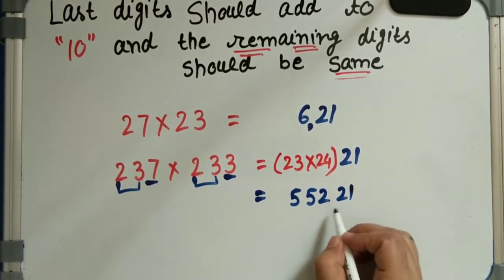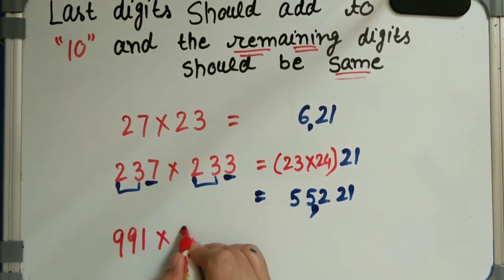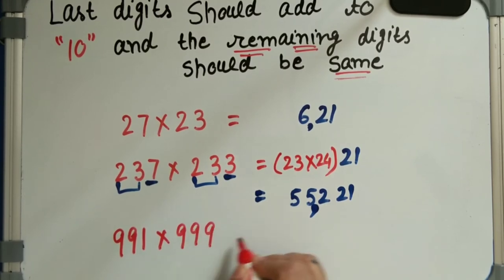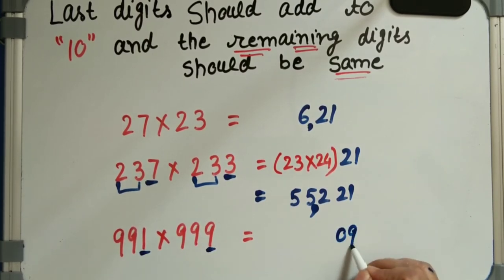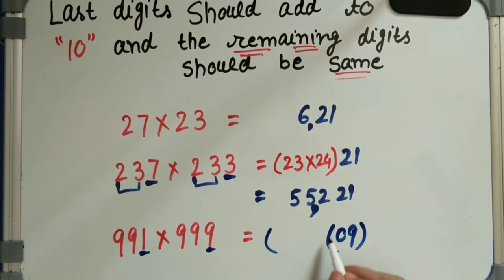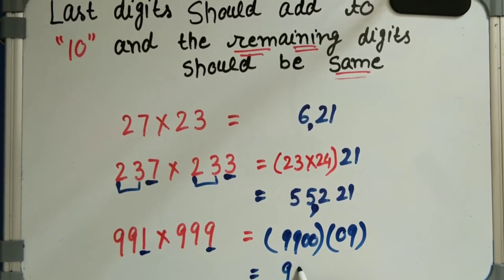Last example: 991 into 999. For the last step, we multiply 9 by 1, which equals 09. Next, we add 1 to 99 to get 100. Then 100 into 99 equals 9900. So the answer is 990009.